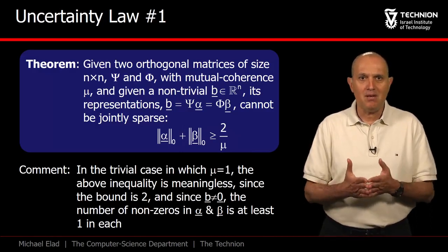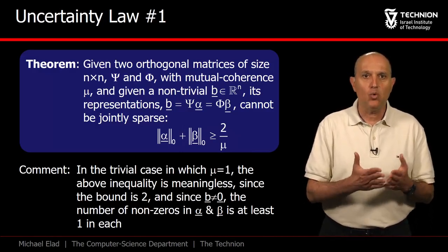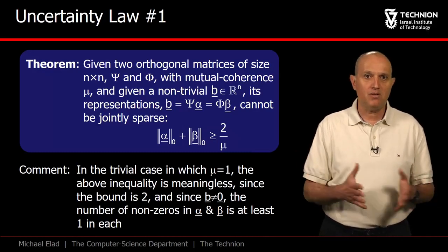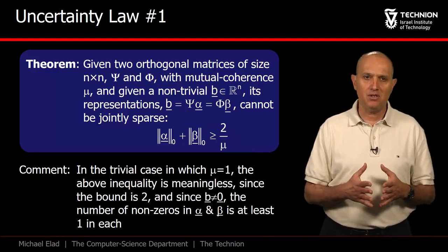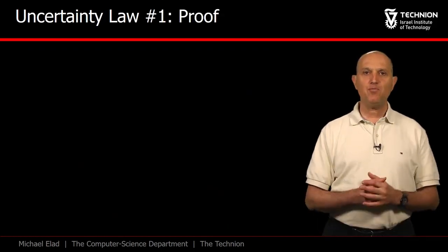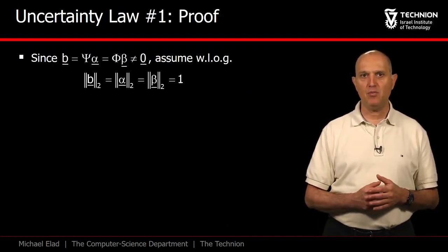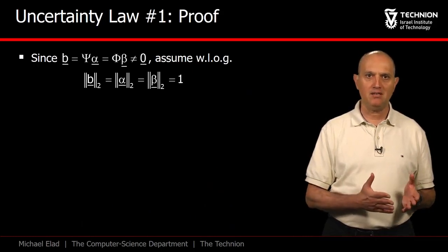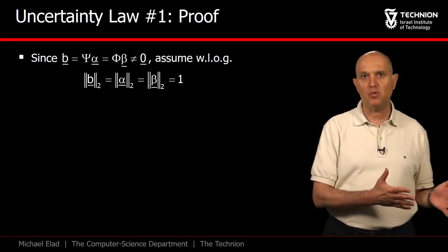In this case, both α and β must have each at least one non-zero, since b is non-trivial. Naturally, we will be interested in more informative cases where μ is very small. Let's prove this theorem. As we have mentioned before, we shall assume that b is normalized, which implies that α and β are of unit norm as well.